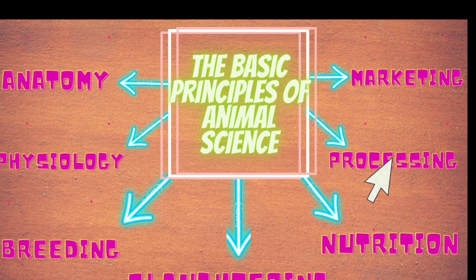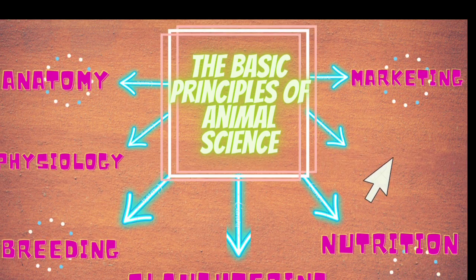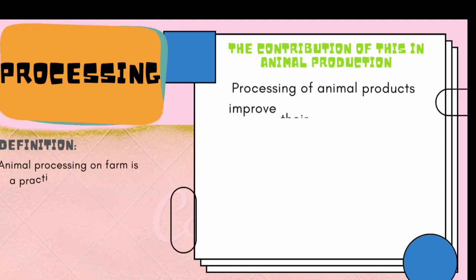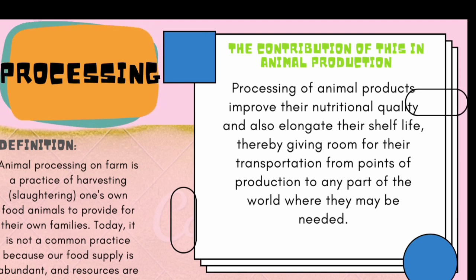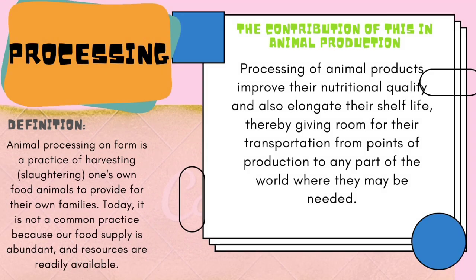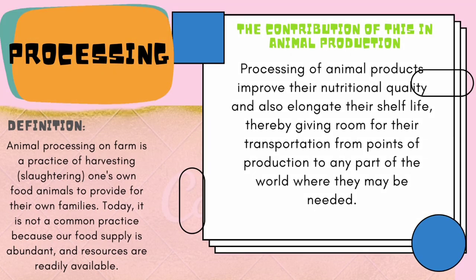The next principle is processing. Animal processing on farms is a process of harvesting or slaughtering one's own food animals to provide for their own families. Processing of animal products improves their nutritional quality and also elongates their shelf life, thereby giving room for their transportation from the point of production to any part of the world where they may be needed.